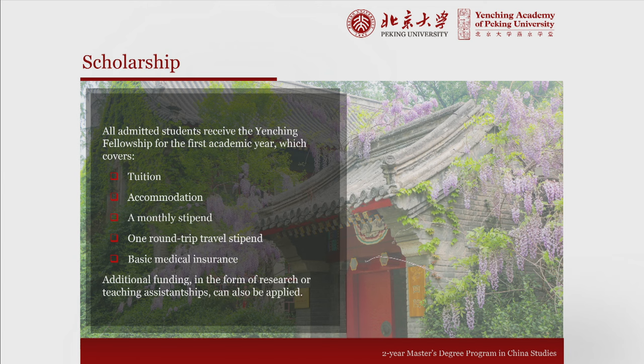Let's talk funding, because in many places in the world, finding a fully funded master's program is quite difficult. At Yanjing Academy, we try to solve the most pressing financial needs of our students by offering the Yanjing Fellowship. This fellowship includes full tuition payment, and accommodation—in the first year in the Yanjing Academy House, a lovely renovated dormitory for Yanjing scholars. In the second year, it can be in the Yanjing Academy House, or off campus with a housing stipend. We offer a monthly stipend for living expenses and cover one round trip travel from your home base to and from Beijing.